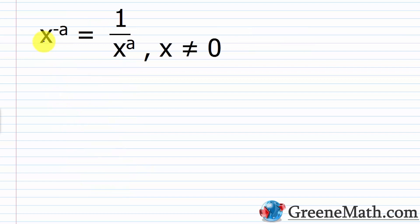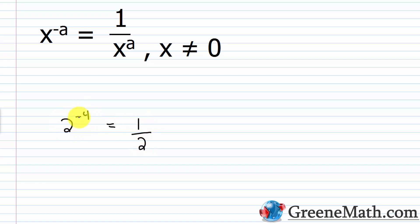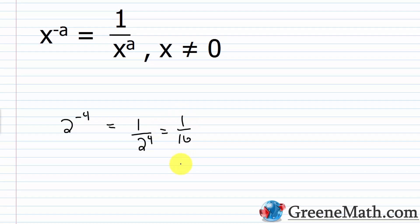For any real number x, as long as x is not equal to zero, if we raise it to the power of negative a, it equals one over x raised to the power of a. In layman's terms, you take the reciprocal of the base and make the exponent positive. So for two to the power of negative four, the reciprocal of two is one half, and the exponent becomes positive four — giving one over two to the fourth power, or one sixteenth. Very easy rule to implement.